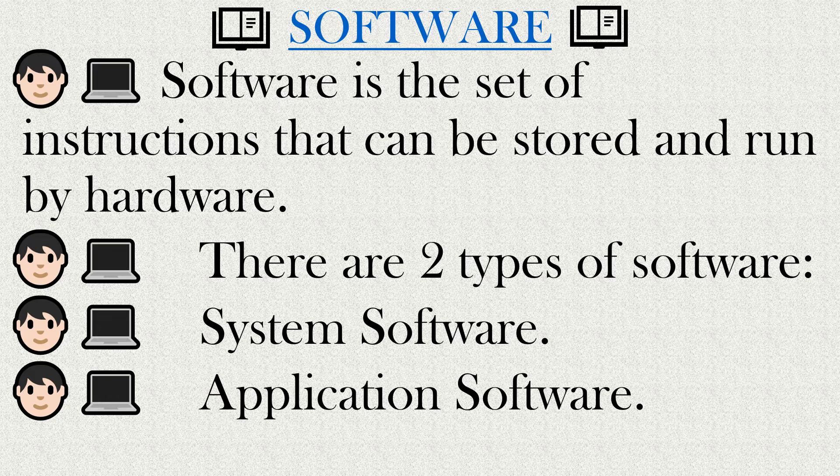Software is a set of instructions. There are two types of software: system software and application software.